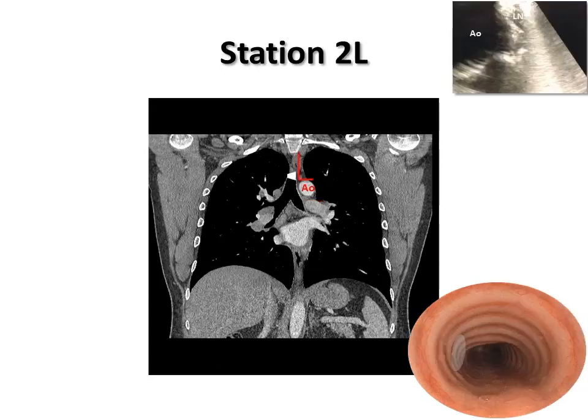Keeping the same view with the transducer oriented toward the 9 o'clock position, continue to pull up the bronchoscope following the aorta. Station 2L is seen just above the aortic arch at the level of the 4th and 5th tracheal ring. The left upper paratracheal lymph nodes extend from the left lateral wall of the trachea. The upper border is the apex of the left lung in pleural space, and the lower border is the superior border of the aortic arch.